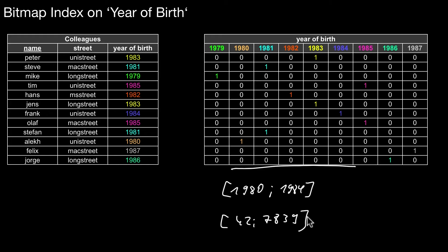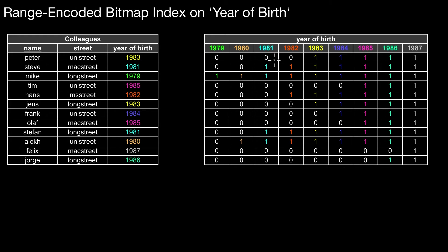That approach is a range-encoded bitmap index. We use the same structure as in the standard bitmap, but the way we set the bits differs. In the standard bitmap, we only set the bit if that exact value exists. In the range-encoded bitmap, we also set this bit if this value actually exists in the original table. However, we also set the bits of all the bitlists representing bigger values. The pattern you see is always a number of zeros followed by a number of ones in every row.